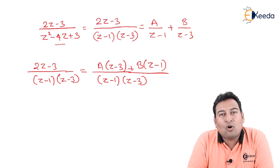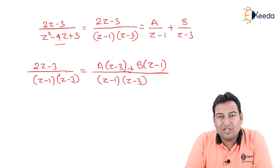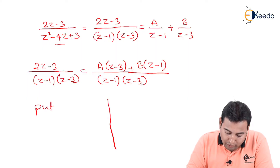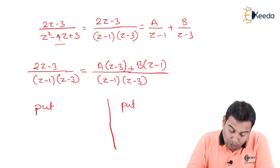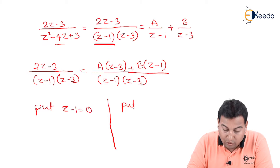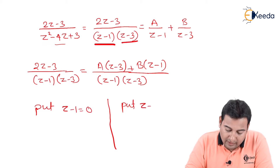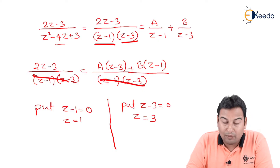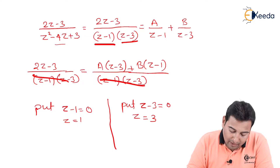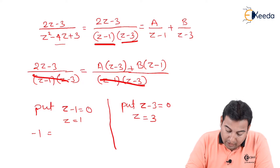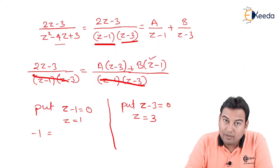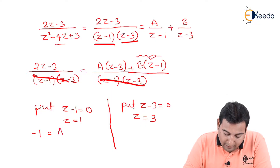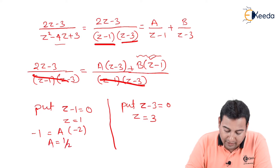Both methods will always work; we choose the one that is better. For this case, we'll use the substitution method. One factor is z minus one, so put z minus one equal to zero, giving z equal to one. Putting z equal to one: one minus three is minus two, and the B term vanishes. So we are left with A times minus two, giving A equal to one half.